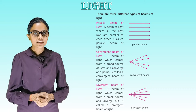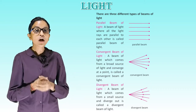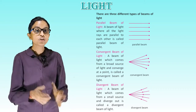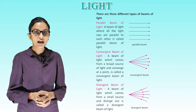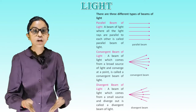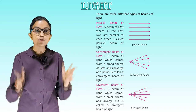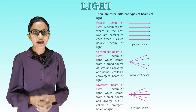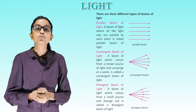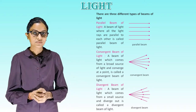Convergent beam of light: a beam of light which comes from a broad source of light and converges at a point is called a convergent beam of light. This is the diagram of a convergent beam of light.